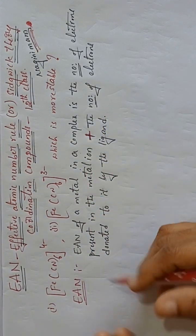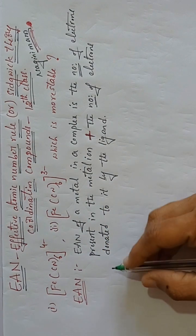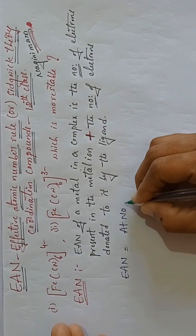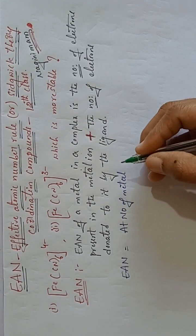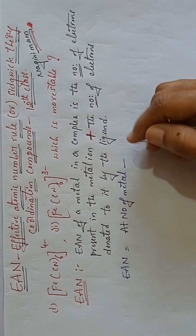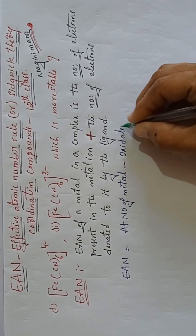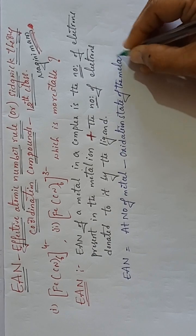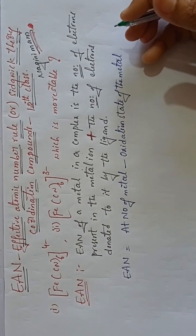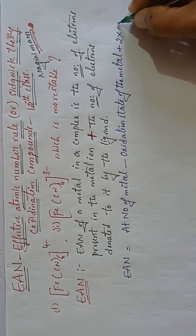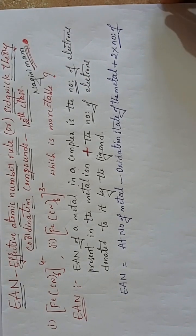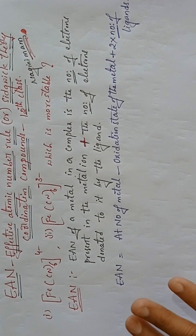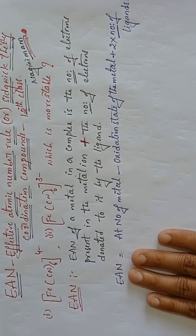To calculate the Effective Atomic Number there is a formula. EAN = Atomic Number of the Metal, minus Oxidation State of the Metal, plus 2 into number of Ligands. This is the formula you have to follow to calculate the EAN value.